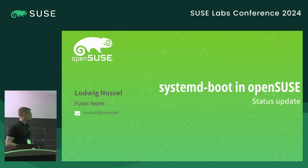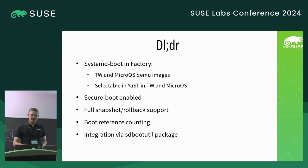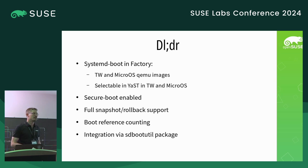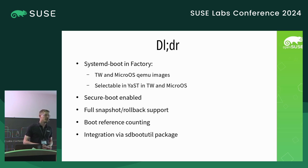Let me start with a summary. Systemd boot is in factory. It's signed, so we even have secure boot enabled. We have images for QEMU, for Tumbleweed, and for MicroOS. It's even an option in the Just installer, so the regular installation image also allows selecting systemd boot. The integration has full support for snapshot and rollback, just like with Grub. We also recently gained boot reference counting, so when a snapshot in MicroOS is bad, it could automatically roll back. All that integration happens via the sdbootutil package.